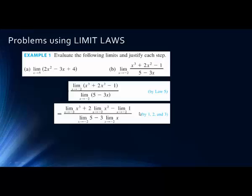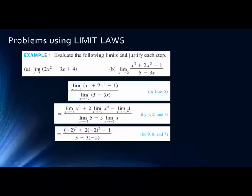Now we have a sum, a difference, and a difference, so we can separate all the parts. Anything with a constant, we can pull it out in front of the limit. The limit of 3x is 3 times the limit of x; the limit of 2x² is 2 times the limit of x². Using the law that x to the power of n gives a to the power of n, we substitute −2 for x: (−2)³, (−2)², the constant −1, constant 5, and −2 for the limit of x. We do the arithmetic and get −1/11.